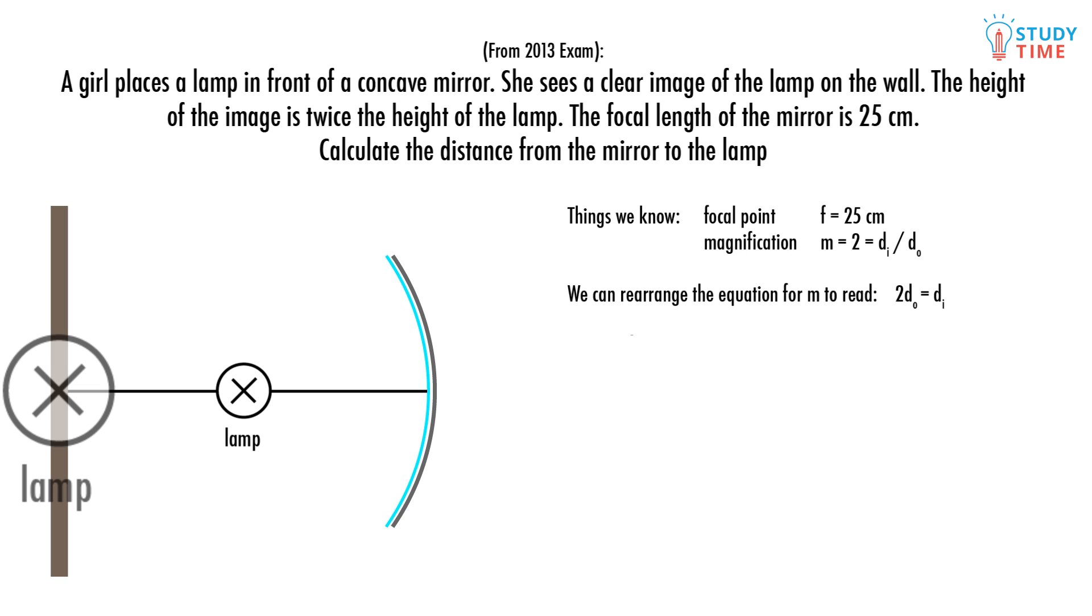We can rearrange and say that the image distance equals two times the object distance, positive since it's on the same side as the object - a real image. To relate focal length, which we know, and object or image distance, which we know in terms of each other, we use one over f equals one over the image distance plus one over the object distance.